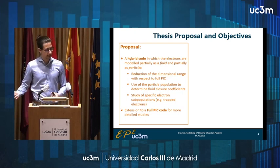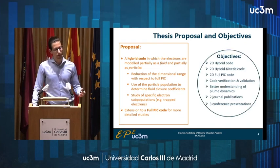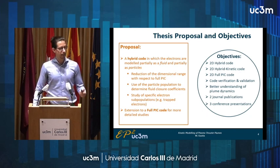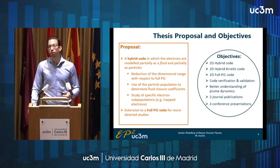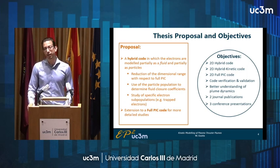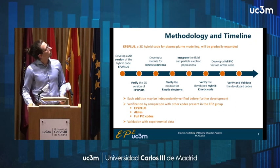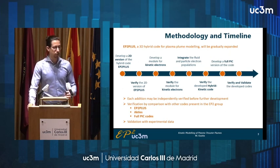The idea is then to proceed to a full PIC code. So the objective of the thesis is to start from a 2D hybrid code, proceed to a code in which electrons are modeled simultaneously as a fluid and as particles, and then take a further step into the 2D full PIC domain. The code should be verified and validated, and we hope through this process to obtain better understanding of plasma fluid dynamics and to produce relevant scientific material. The idea is to start from EP2+, which is a 3D hybrid model for plasma plume modeling already present and tested in the group, and to expand it gradually.